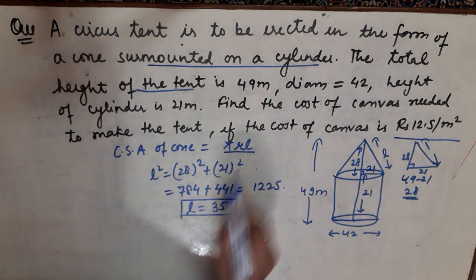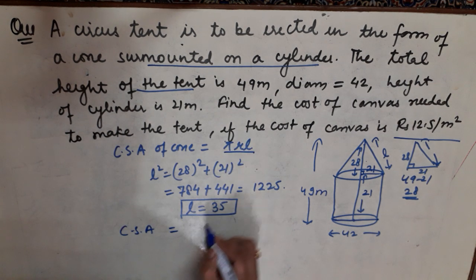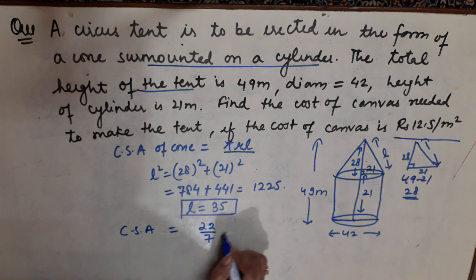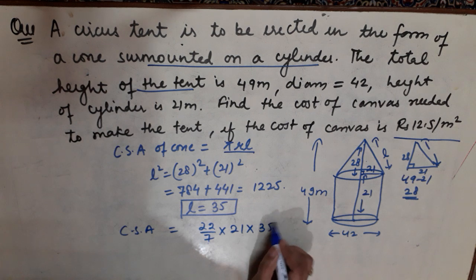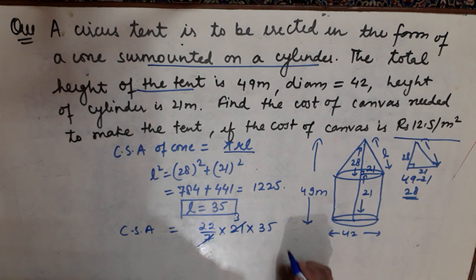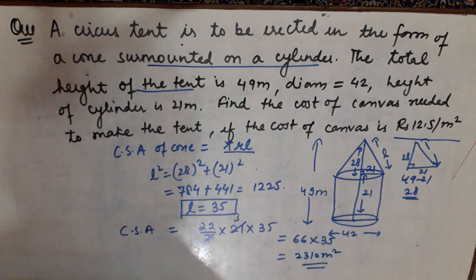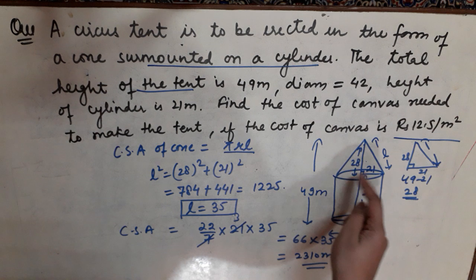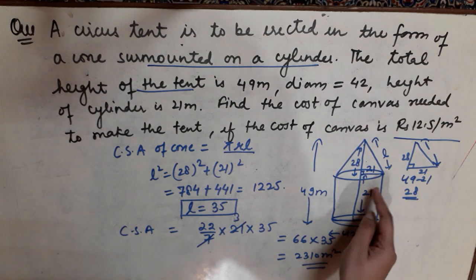Now we can find the curved surface area of the cone. Curved surface area = π R L = (22/7) × 21 × 35. Simplifying: 7 cancels, giving 66 × 35, which equals 2310 meter square. So the curved surface area of the cone is 2310 m².